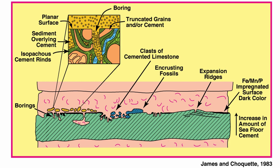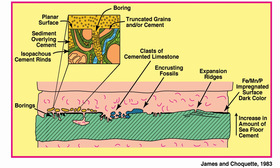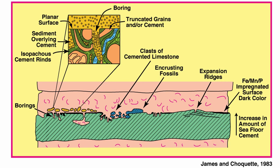To call something a hard ground, you need to demonstrate that cementation happened early while sediments were in contact with seawater. The best evidence includes: boring (identified by truncation of grains or sediment filling boring cavities); expansion ridges where cement cracked the surface forming structures similar to tepee structures but at a smaller scale; encrusting organisms colonizing the substrate, proving it was hard when they lived; and rip-up clasts. These are all classical evidence for hard grounds.